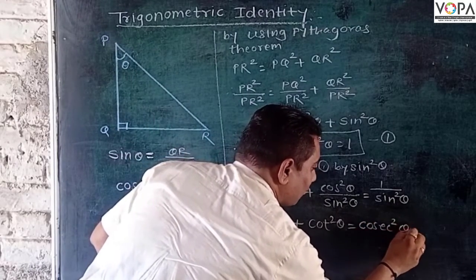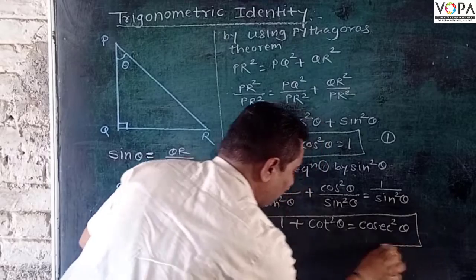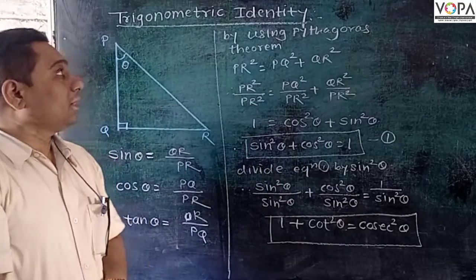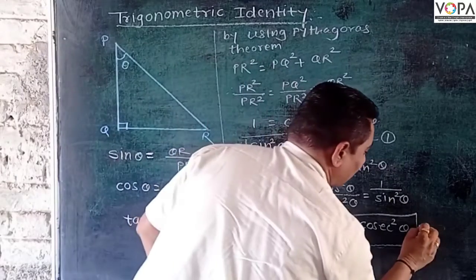We get 1 upon sine is cosecant. Therefore, we have cosecant square theta. So in this way, we can calculate our second trigonometric identity.